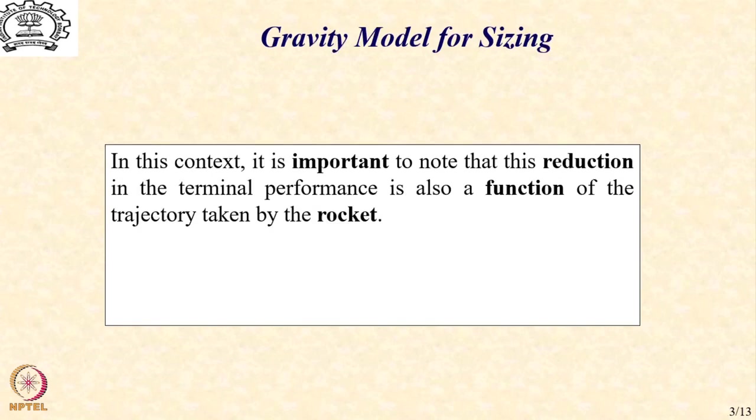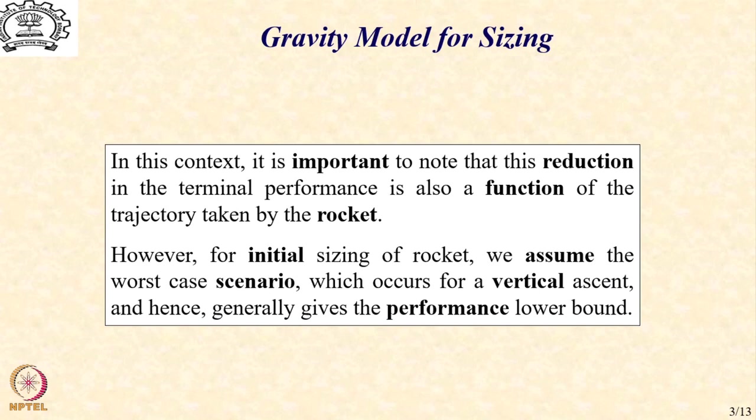Let us now look at a typical gravity model for initial sizing of the rocket. In this context, it is important for us to note that this reduction in terminal performance is also a function of the trajectory taken by the rocket. However, for initial sizing purposes, we assume the worst case scenario which occurs for a vertical ascent case and hence generally gives the performance lower bound.